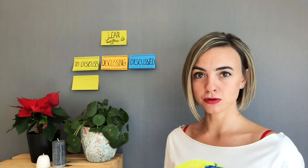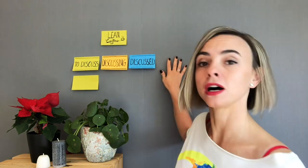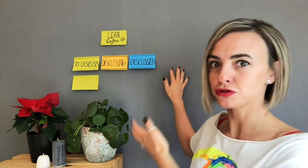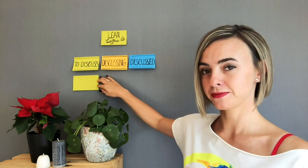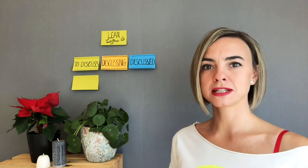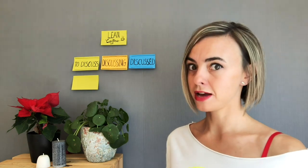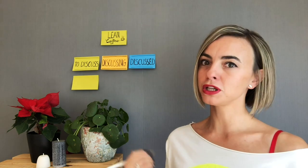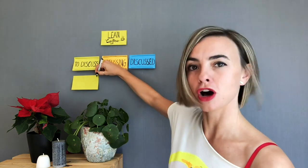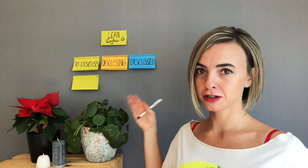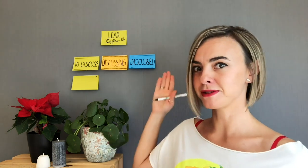If you want to use it for a retro you can add a fourth column called actions, and then you draw actions at the end of the discussion. After you've gathered all the topics, you ask the participants to present them in one or two sentences. Then everyone gets to vote on the ones that interest them most. We use a simple dot voting technique — basically we draw a dot. We give everybody two or three votes and then we prioritize the topics according to the number of votes they got. This is how a prioritized agenda for the meeting emerges.